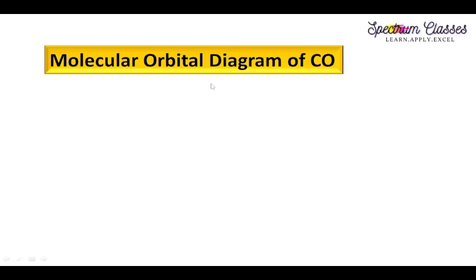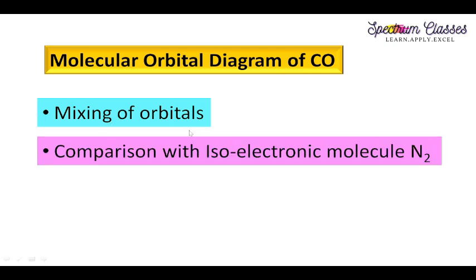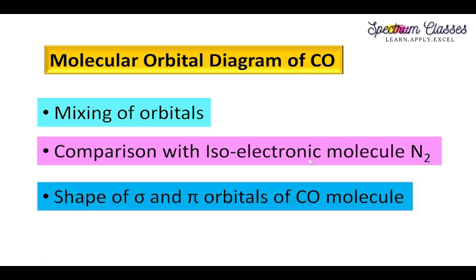Hello everyone, welcome back to Spectrum Classes. In this video I am going to show you how to draw the molecular orbital diagram for the CO molecule. This CO molecule is very important in organometallic chemistry. We will discuss the mixing of orbitals, compare CO with its isoelectronic nitrogen molecule, and discuss how carbon monoxide behaves as a sigma donor as well as a pi acceptor molecule.